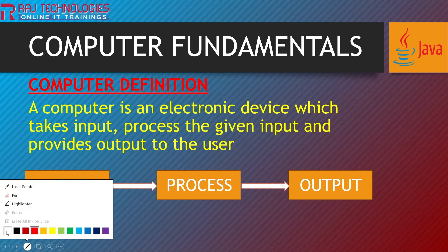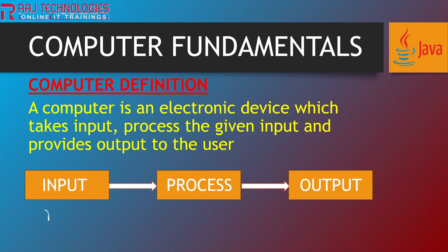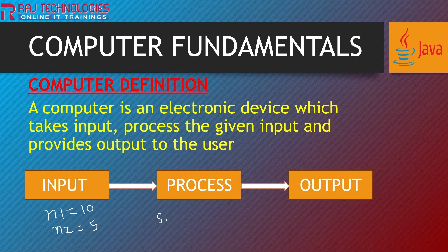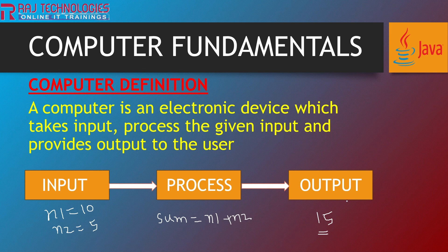For example, if you take two numbers like n1 equal to 10 and n2 equal to 5, this is our input. Now we want to do the process — we want to find the sum of these two numbers. So the process is sum equal to n1 plus n2, we are adding these two numbers. This calculation only we call process. Then output — after adding these two numbers we are going to get the output as 15, that is 10 plus 5. That result only we call output.